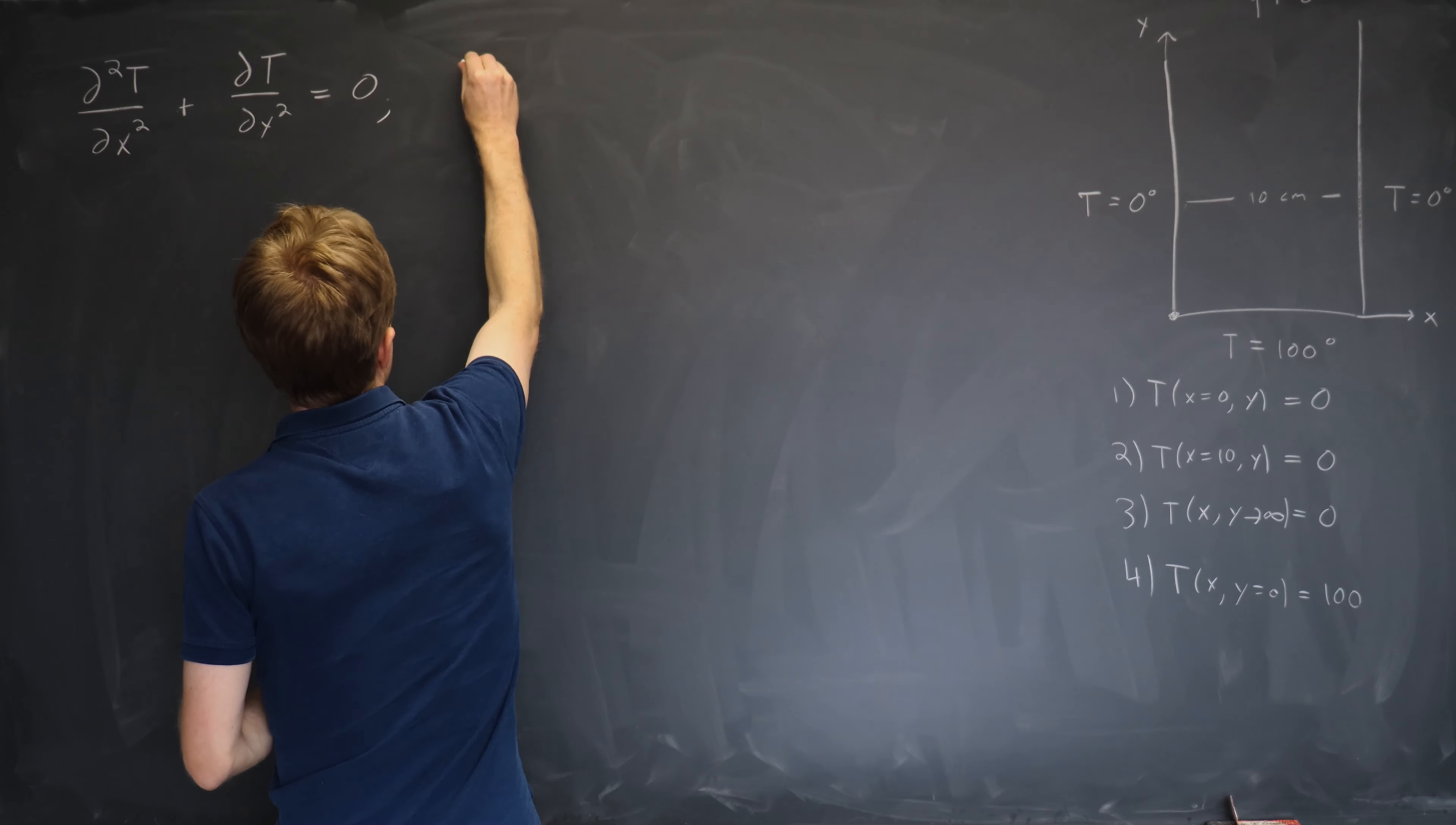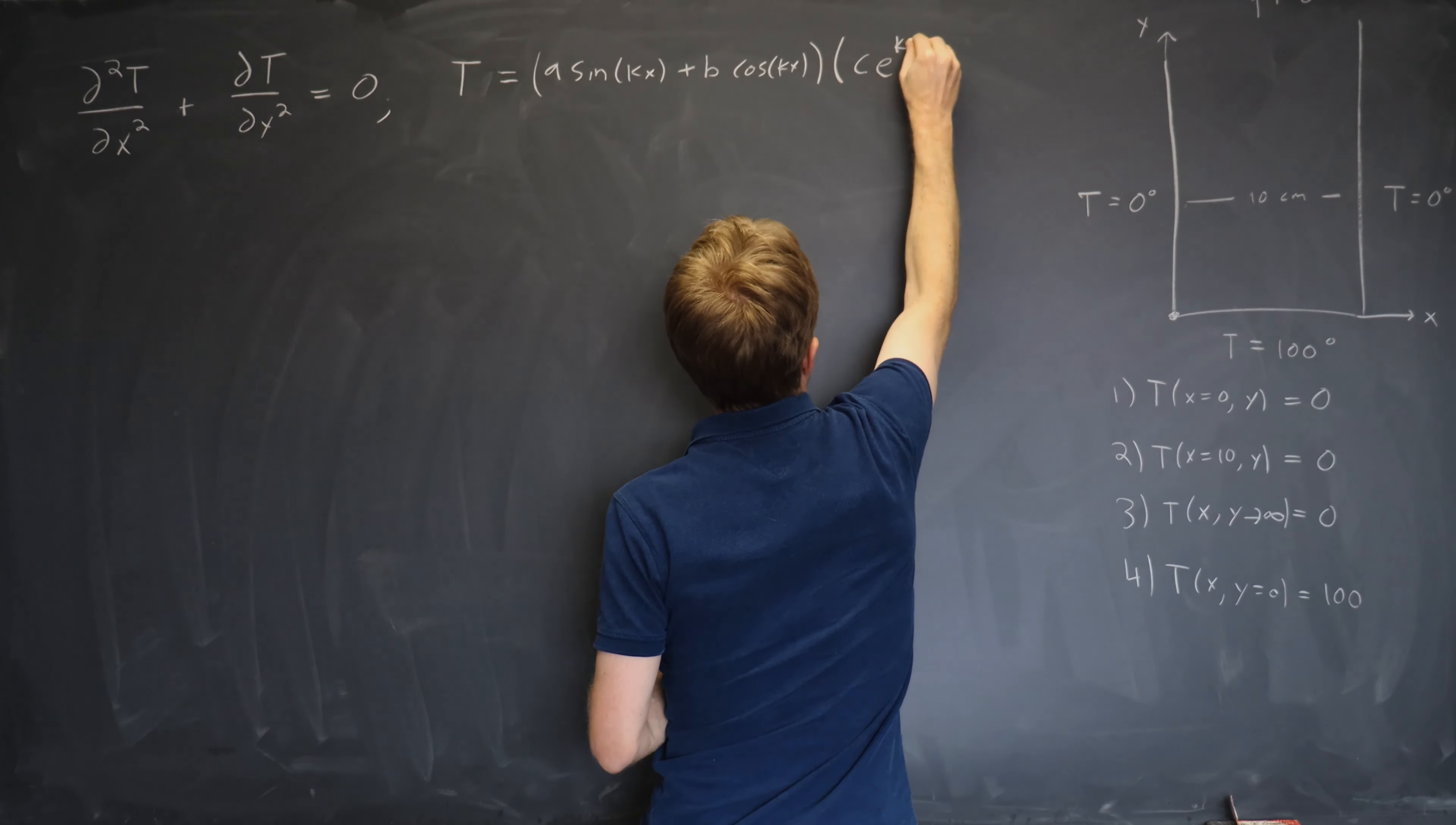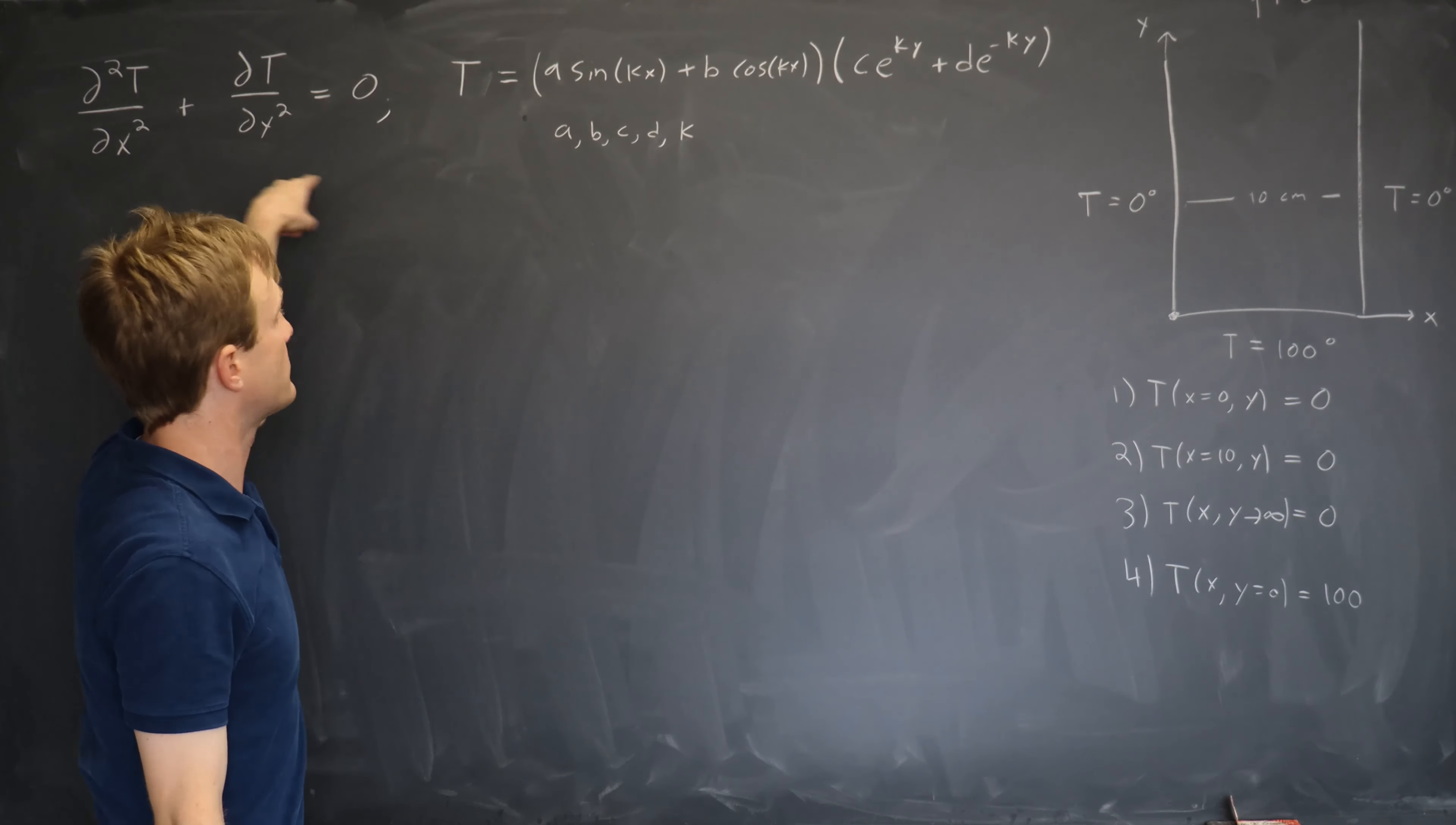So recall that in the last video we had found a whole bunch of solutions taking the form of a product X(x) times Y(y), which we wrote as a sine(kx) plus b cosine(kx) times c e^(ky) plus d e^(-ky). So for any numbers a, b, c, d, and k, this solution solves the Laplace equation.